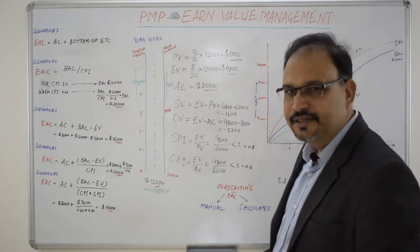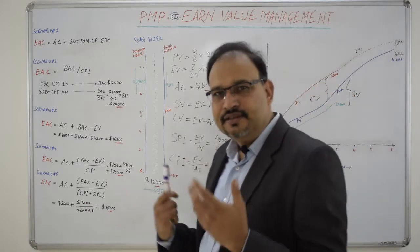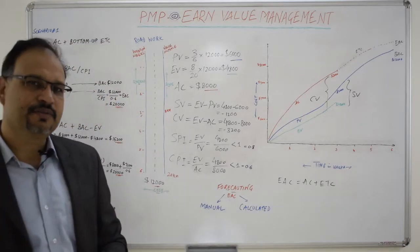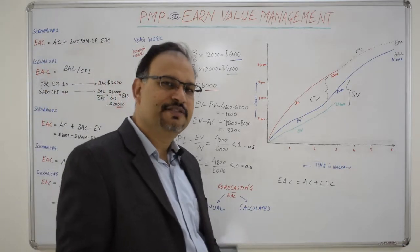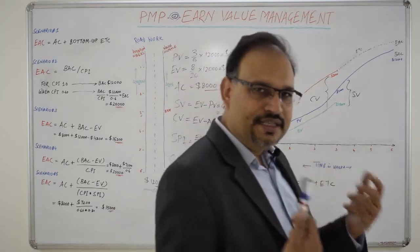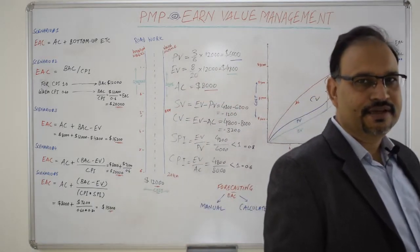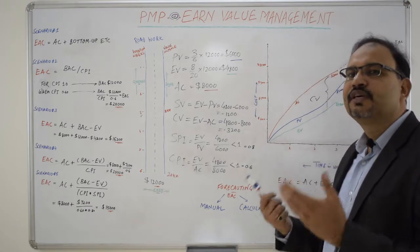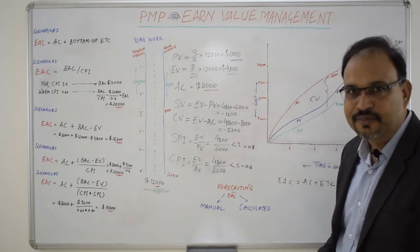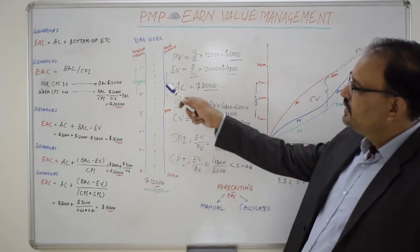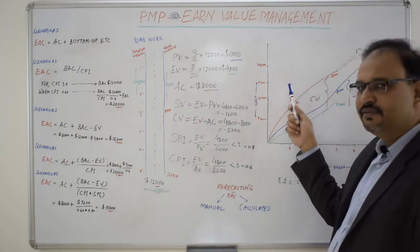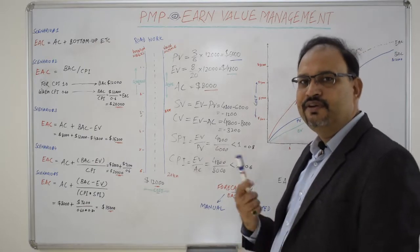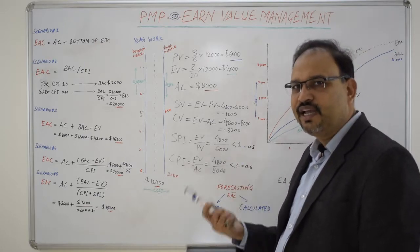Hello everyone, this is Ajit here. This session is in continuation of my earlier session where I talked about Earned Value Management, its basic matrices, an example, and a graph to explain that. In this session, I'll be talking about some of the forecasting methods for Earned Value Management. I'll take the same example and the graph which I used in my previous session.